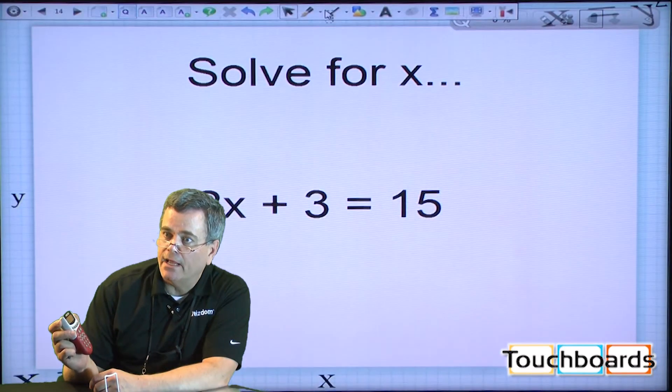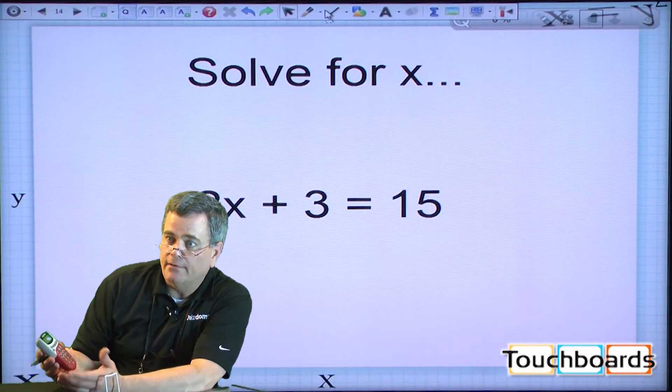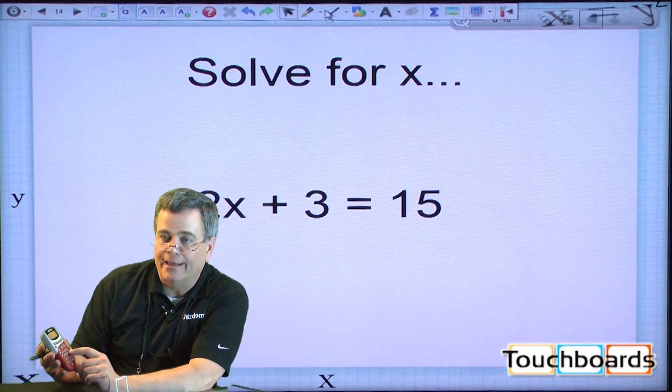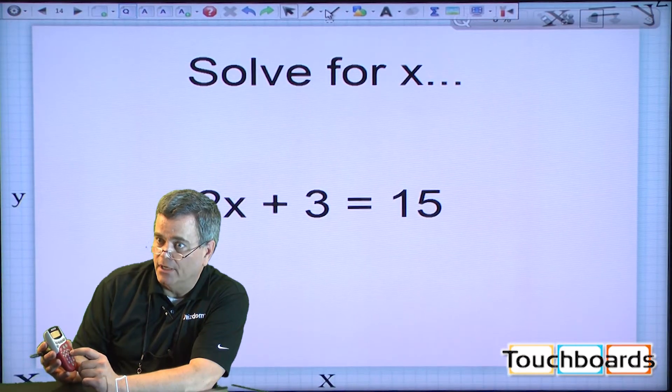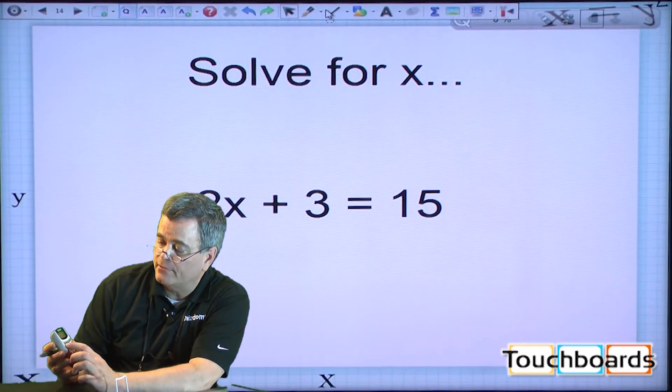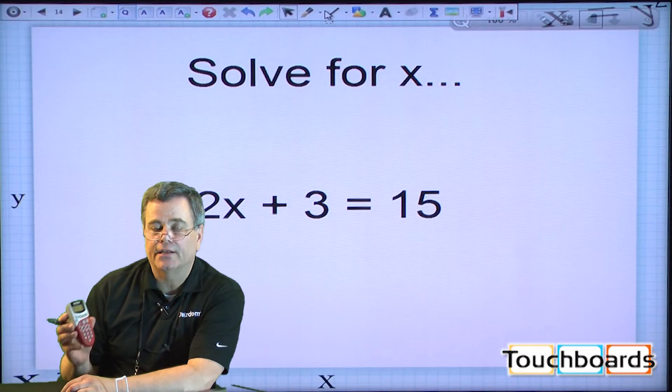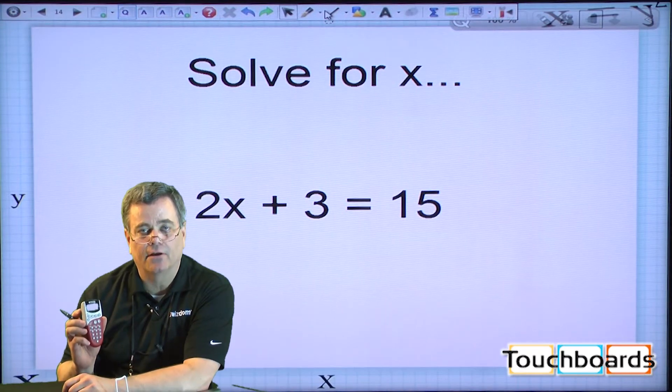We'll go to the next question here, and it's Solve for X. What I'm going to put in here is not A, B, C, D, but I'm actually going to put in a number. In this case, I'm going to enter 6. Ah, I get a check. That means I got it right. Fantastic.